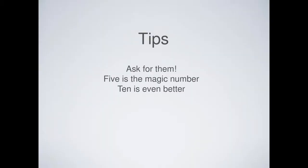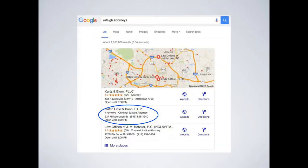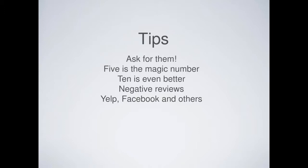Five is the magic number, and ten is even better. Once you get to five reviews, Google will show that average rating and star icons. I see a lot of businesses with four reviews — you've got to go get that fifth one. As soon as you get those stars, if you've got a good rating, it will dramatically influence click-through rate. Getting from four reviews to five with stars will probably double your click-through rate on that listing. Once you get to ten, the average rating seems to become something of a ranking factor.